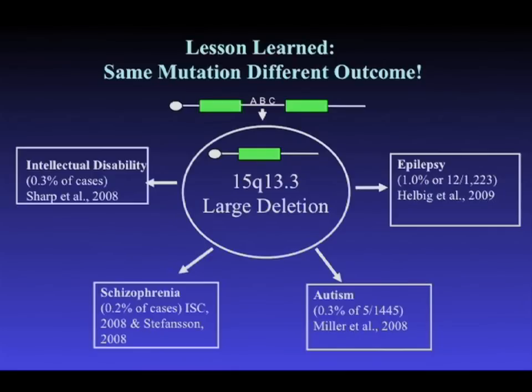Even though this is individually rare in each disease, the impact of this single deletion alone is huge with respect to health burden in society — affecting schizophrenia, epilepsy, autism, and intellectual disability. Other loci were found as well, such as a deletion of 1q21 associated with schizophrenia, developmental delay, and in that case also congenital heart defects and cataracts in children.